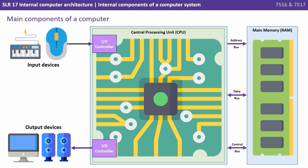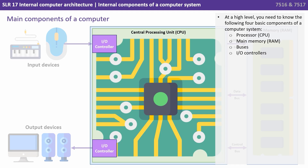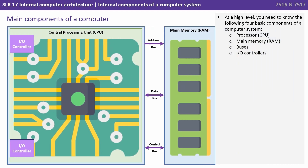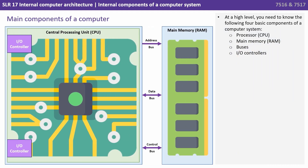Here we see an abstraction of a computer system. The input and output devices are on the left; they're plugged into the main PC via input-output controllers, and then we have the main memory or RAM on the right connected with a series of buses. At a high level you need to know the following four basic components: the processor (CPU), main memory (RAM), the buses, and the I/O controllers.